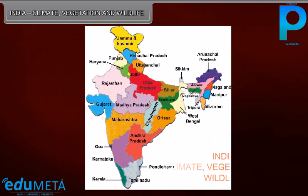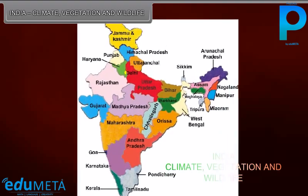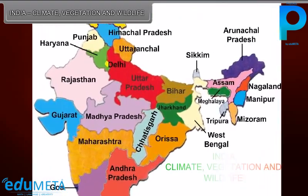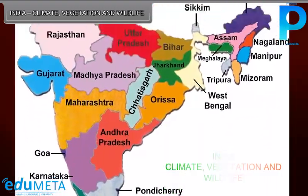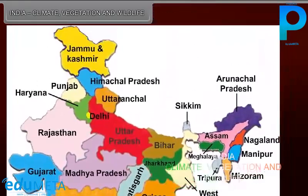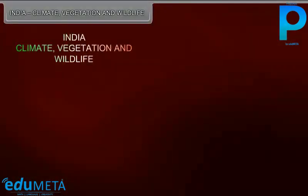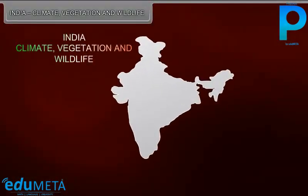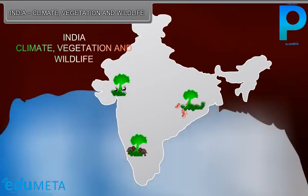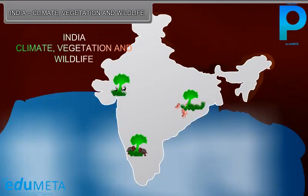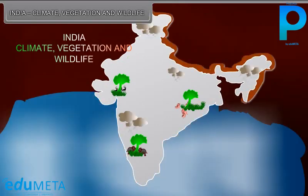India is a large-sized country with a variety of relief features. The vast size, varied relief features, latitudinal extent, proximity to the sea, and the direction of monsoon winds are the important factors which affect the climate of India.